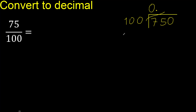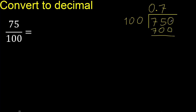Which number is nearest to 750 but not greater? 100 multiplied by 8 is 800, which is greater. Therefore, multiplied by 7 is 700 — not greater. Subtract. There is no remainder, therefore complete with 0. 500.